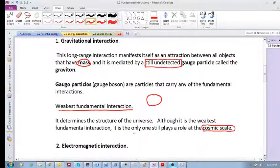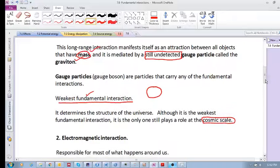The next one is electromagnetic interaction. I just want to repeat here, for the gravitational interaction, the attribute is mass, its gauge particle is the graviton, it's the weakest fundamental interaction, and it attracts all objects that have mass.